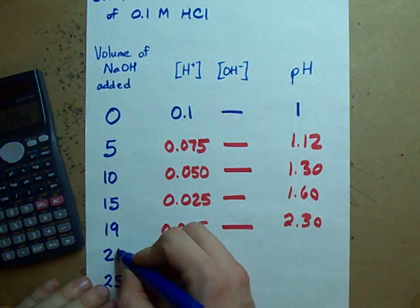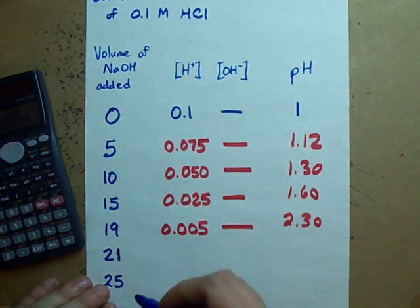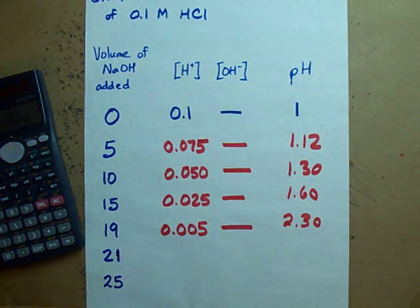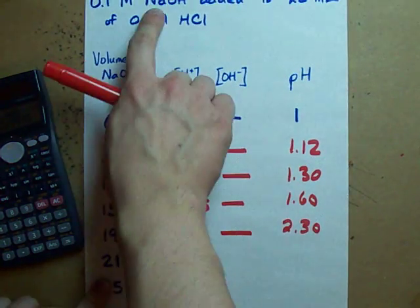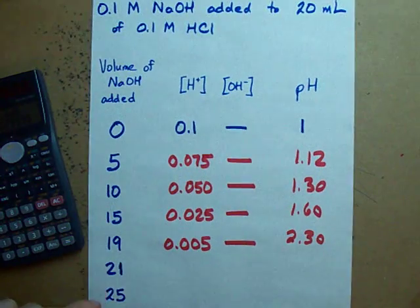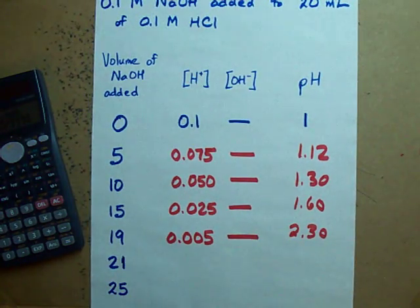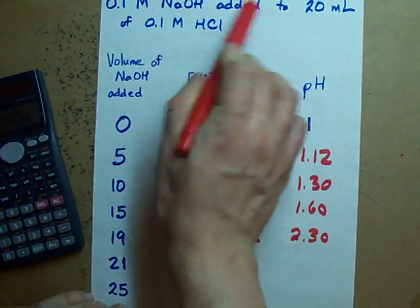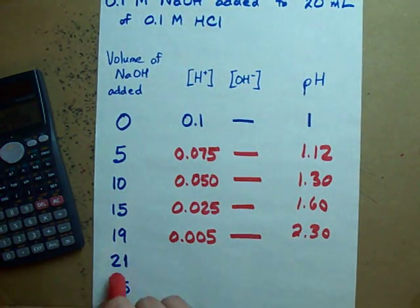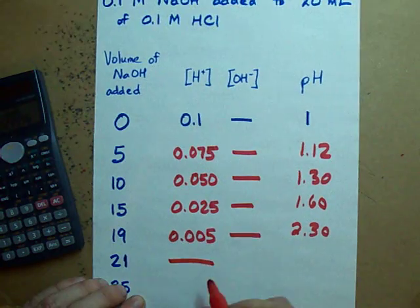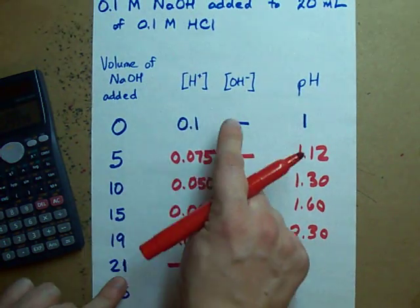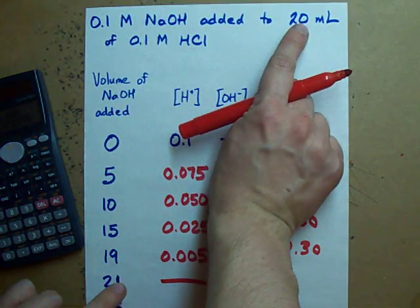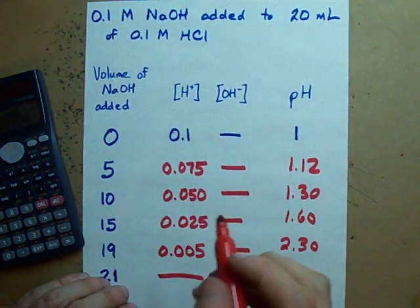I want to do a little experiment here. What happens when I add 21 milliliters of base? Well, all of a sudden, all my acid is gone. I only had 20 milliliters of the acid and now I'm adding 21 of base. You know what that means? I have an extra milliliter of base left over after I've titrated away all the acid. All of a sudden, I have excess base left over.